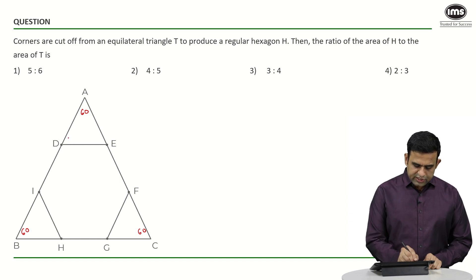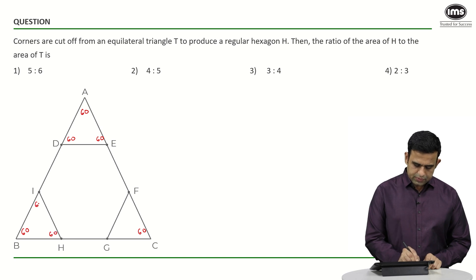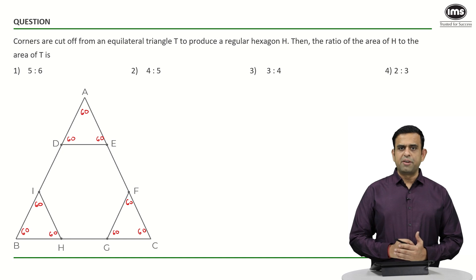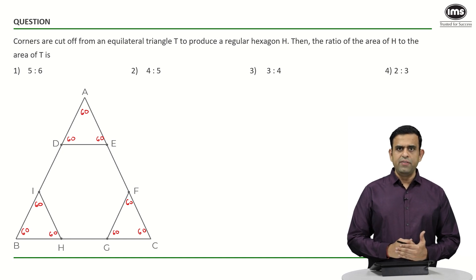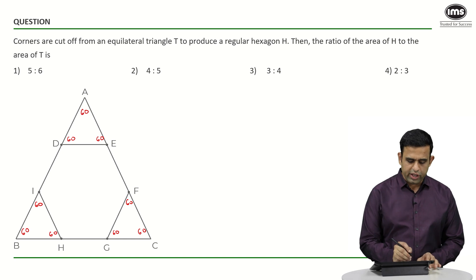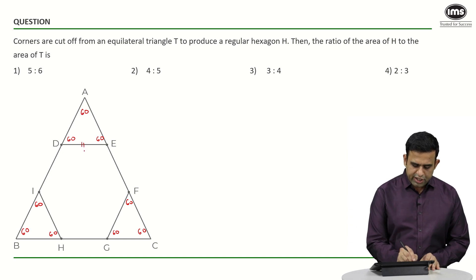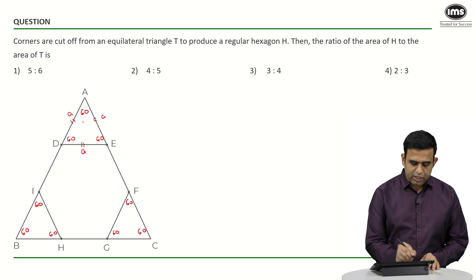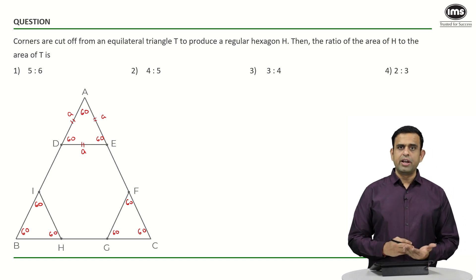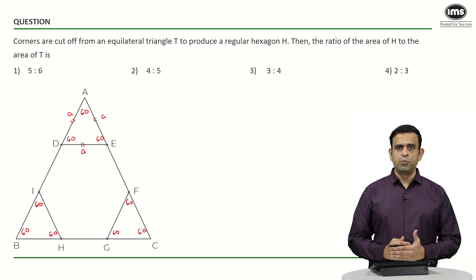These angles are also equal to 60°, which means the length of AD equals the length of DE, which in turn equals the length of AE. So if we call each of these parts 'a', then since DE = a, all other sides of the hexagon also become equal to a.